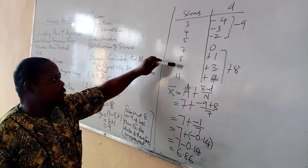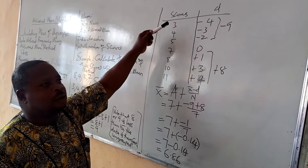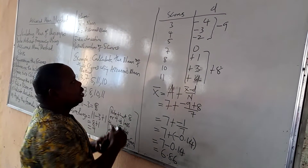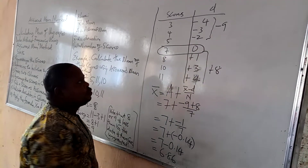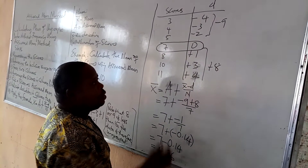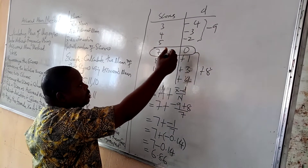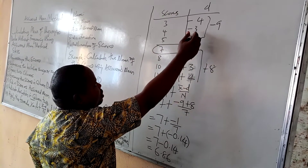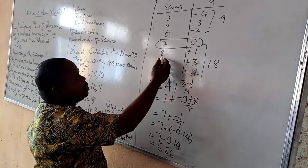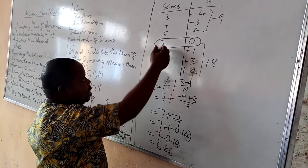The scores in column one are: three, four, five, seven, eight, ten, and eleven. In column two, we determine the deviation. First, we pick a score as the assumed mean — here, seven has been chosen as the assumed mean. So seven will have a deviation value of zero, as that is where the distribution originates. Going upward: five minus seven is minus two, four minus seven is minus three, three minus seven is minus four. Below seven: eight minus seven is plus one, ten minus seven is plus three, and eleven minus seven is plus four.